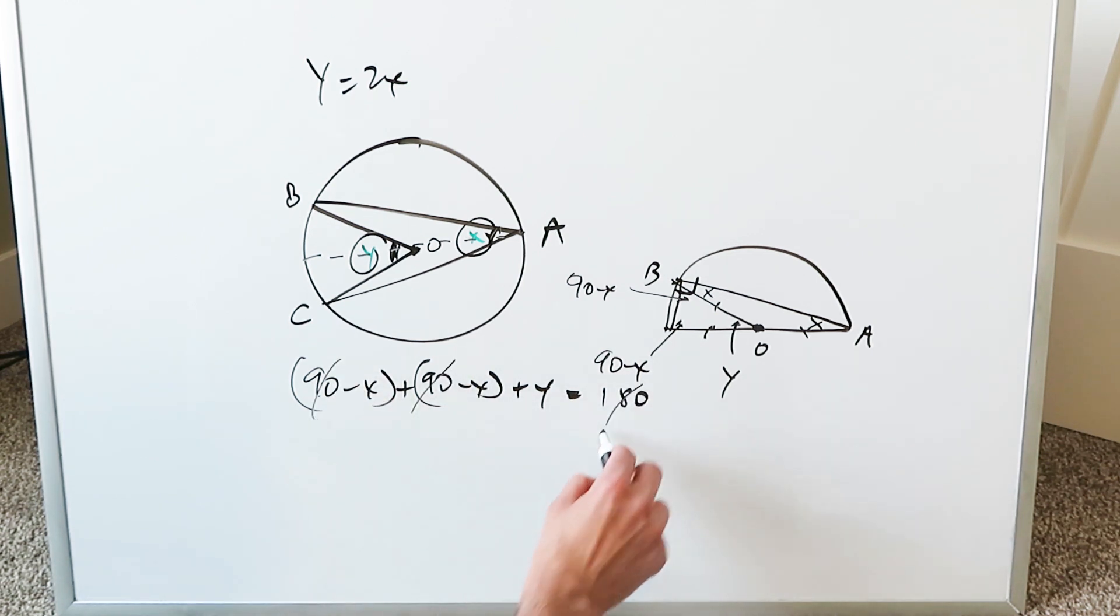This, this, this cancel out. We have minus 2X plus Y is equal to 0. Y is equal to 2X. And that's about all you have to do.